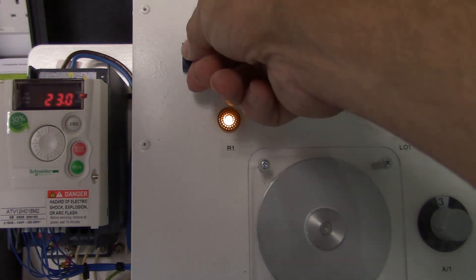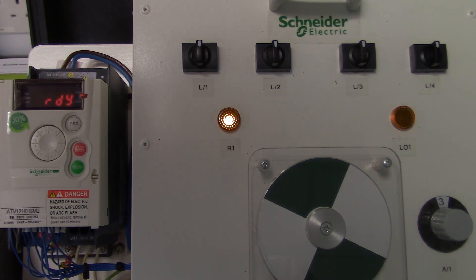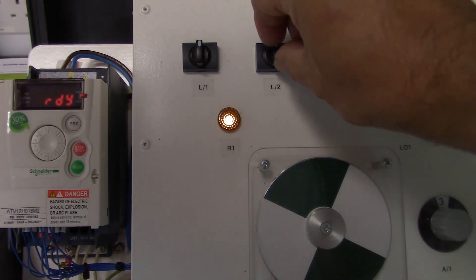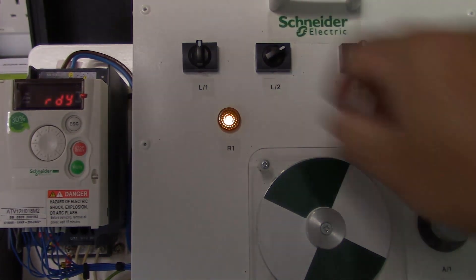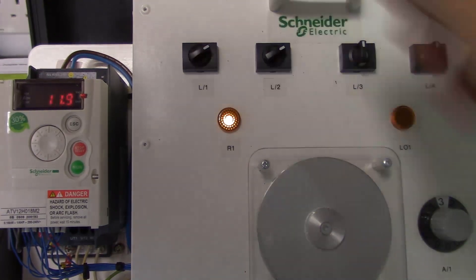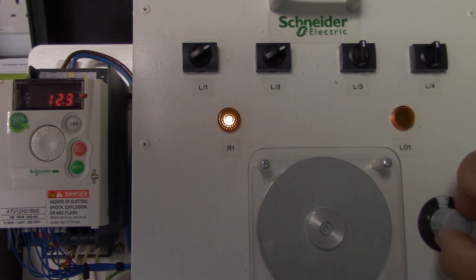If I now stop the drive and close logic input 2 I will now have manual control. The start and stop will be on the LI1 connection and the speed will be the analog input 1 from the potentiometer.